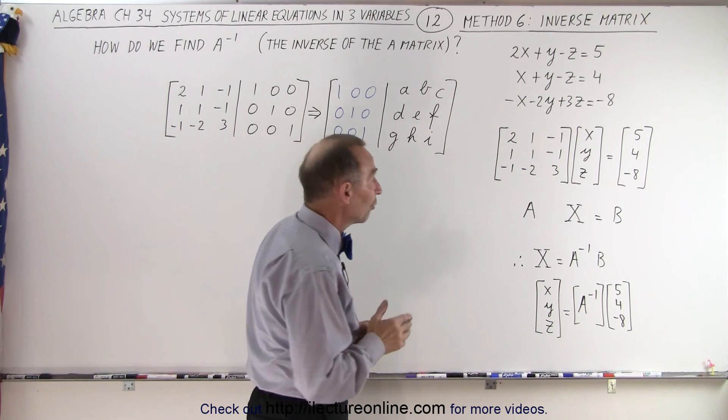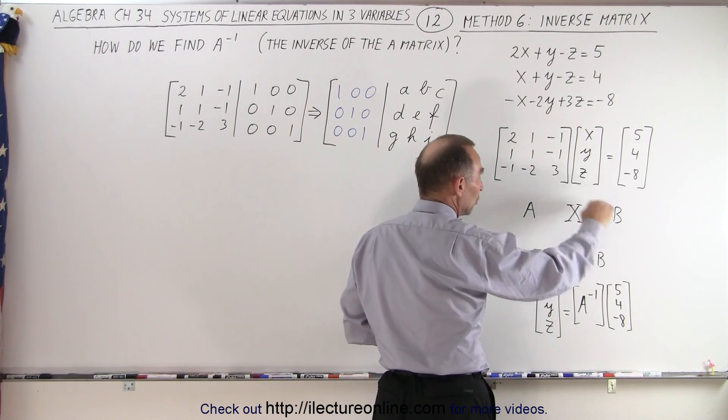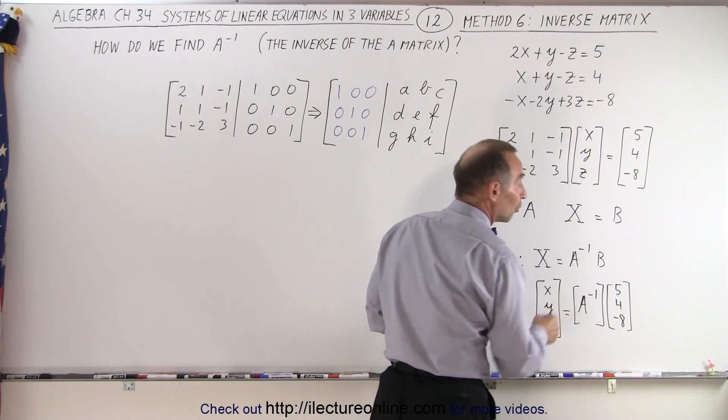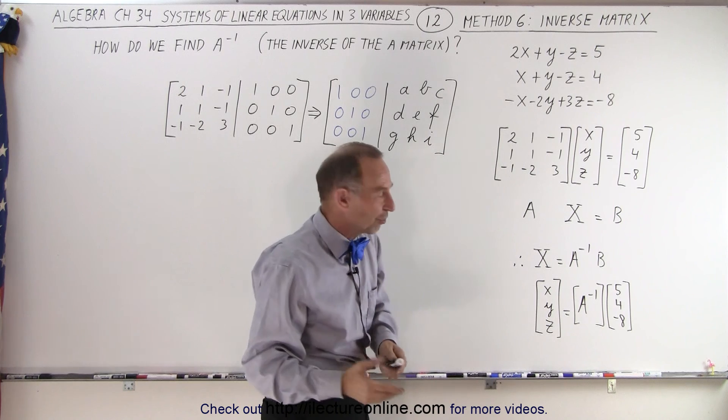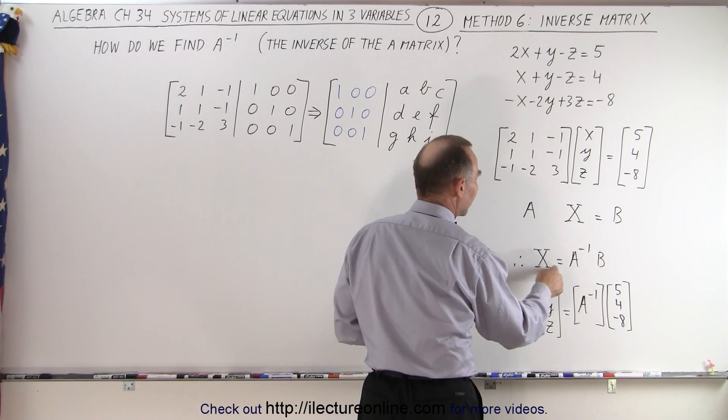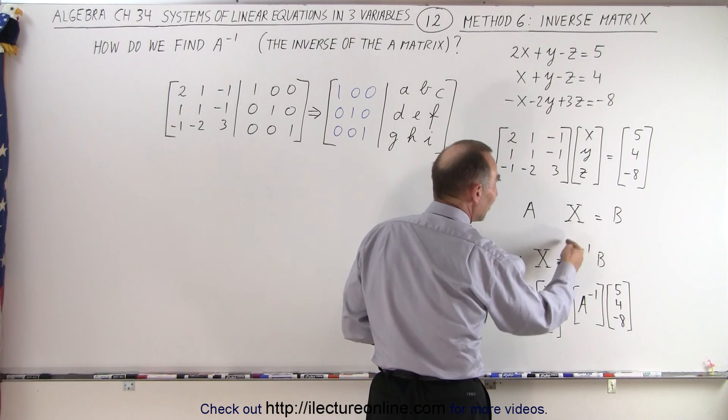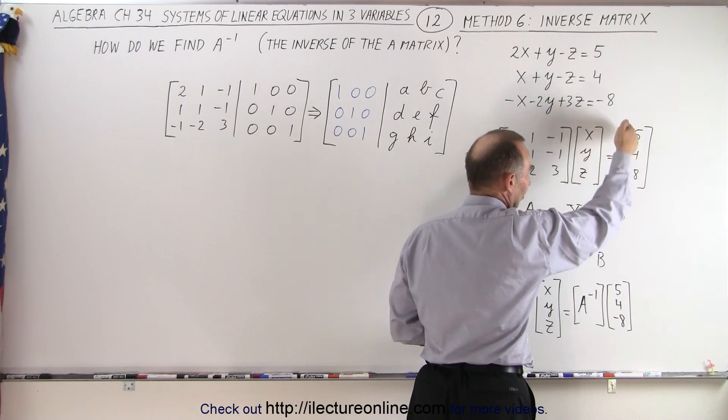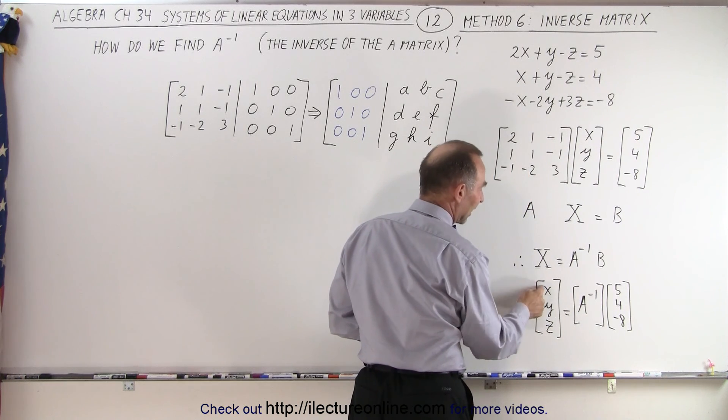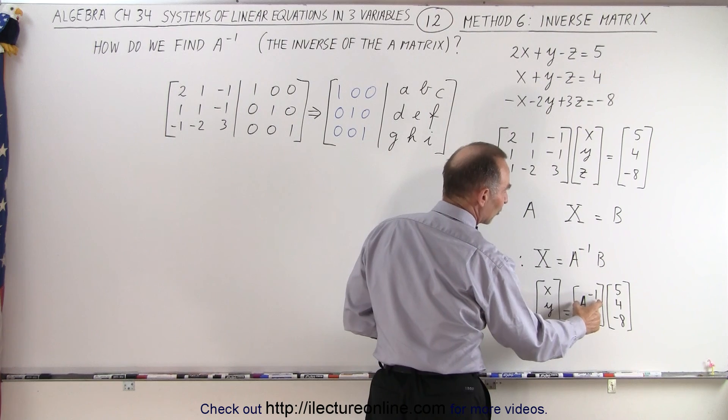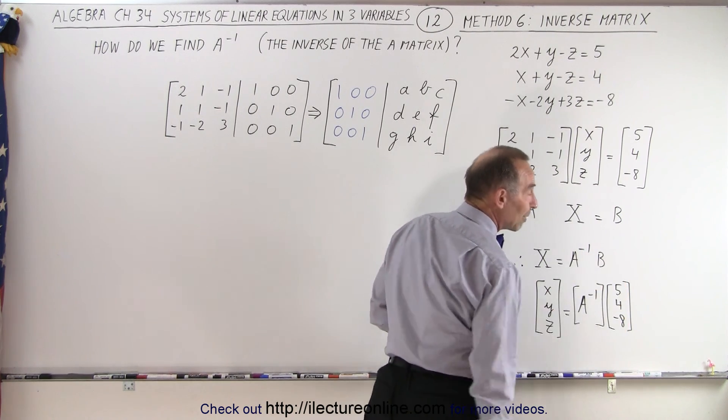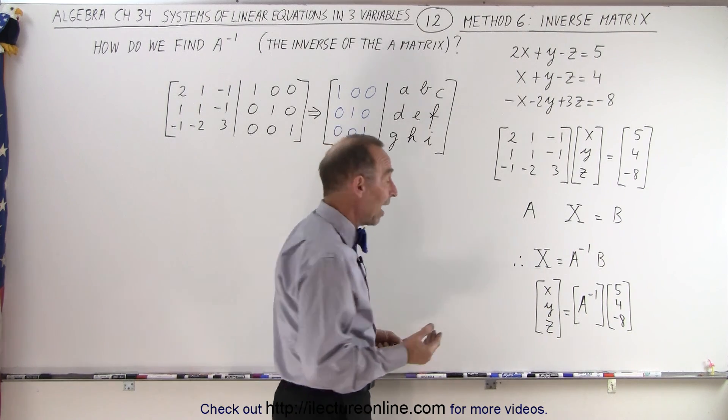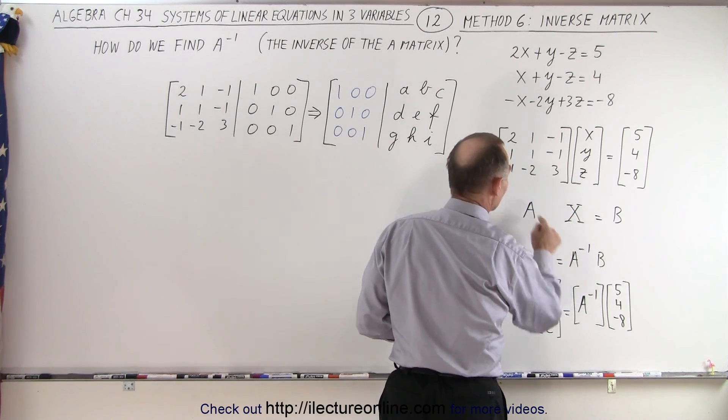Now, it turns out to find the values for x, y, and z, we can rearrange this. We can move the A to the other side of the equal sign, but then turn it into what we call the inverse of matrix A. So the variables x, y, and z can be defined by taking the inverse of the matrix A and multiplying it times the B matrix. We can simply say that x, y, and z can be found by taking the inverse matrix and multiplying it times the B matrix. But the real trick is, how do we find the inverse of the matrix A?